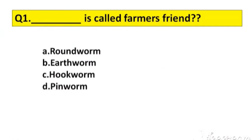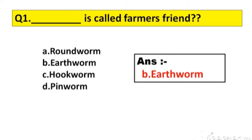Question number 1. Das is called farmer's friend. Option A: Roundworm. B: Earthworm. C: Hookworm. D: Pinworm. The right answer is option B, Earthworm.